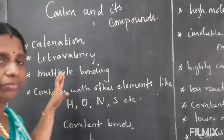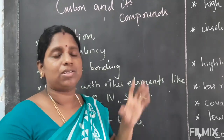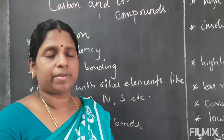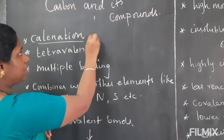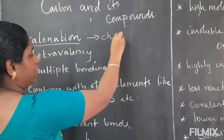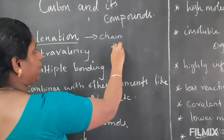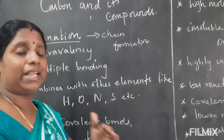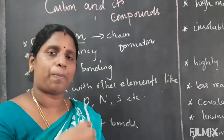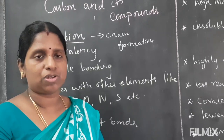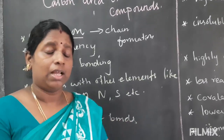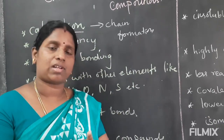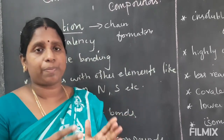First thing: what are the properties of carbon? Carbon has catenation. Catenation means chain formation. Carbon has to be combined with some other elements to form an open link or closed link — that is the catenation form.